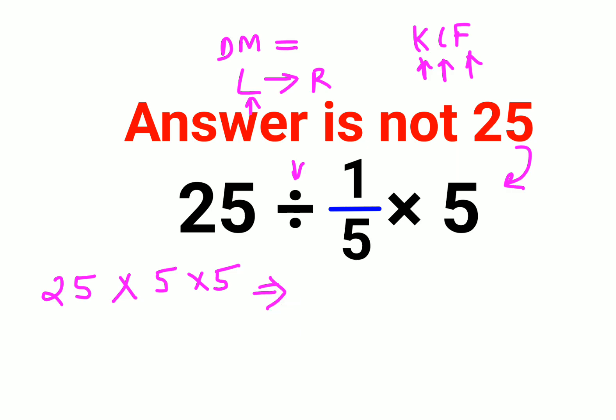So basically all you have to do is 25 into 5 is 125 into 5. The answer comes out to be 625.